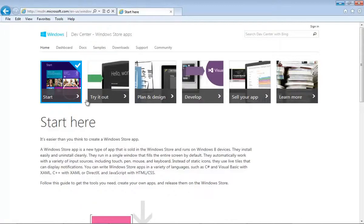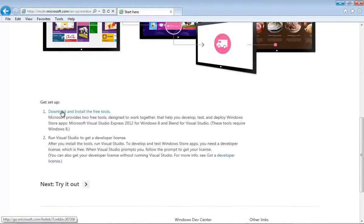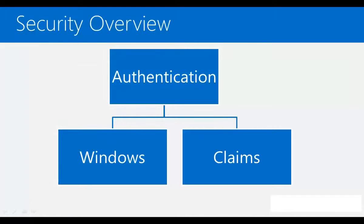There are plenty of resources available, including tools required to develop, design, test, and publish your applications. There are two broad categories of authentication scenarios: Windows authentication and claims authentication. Windows authentication is primarily used for enterprise scenarios where users are connected to a domain, either through VPN or being on-premise, while claims authentication is used for both enterprise and consumer-based scenarios.